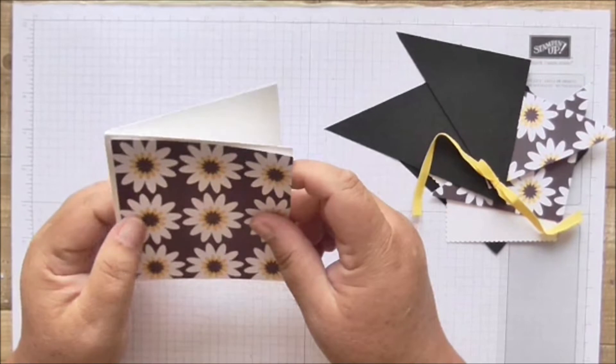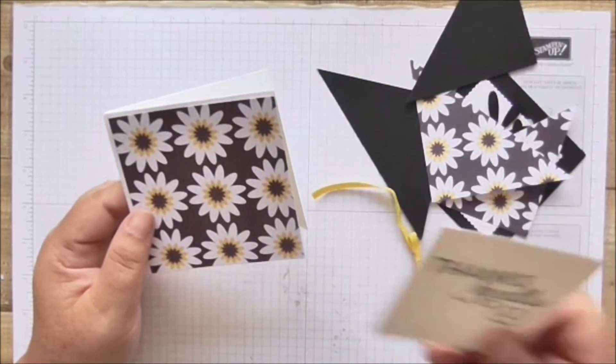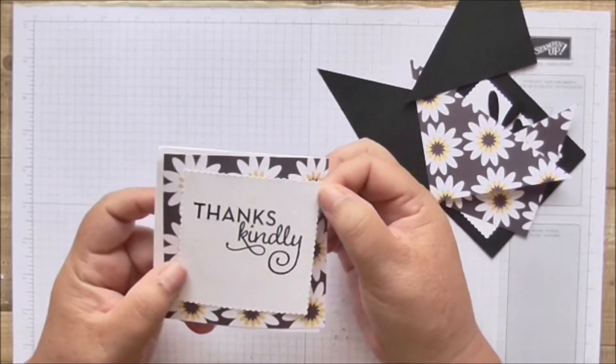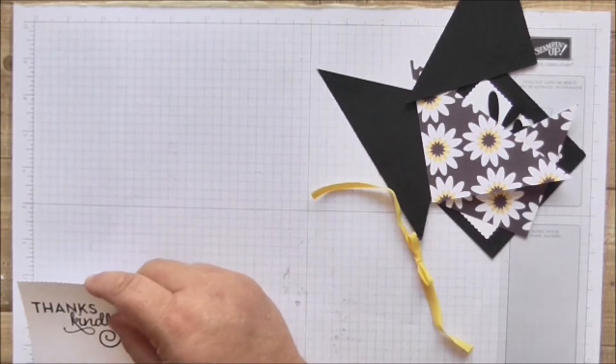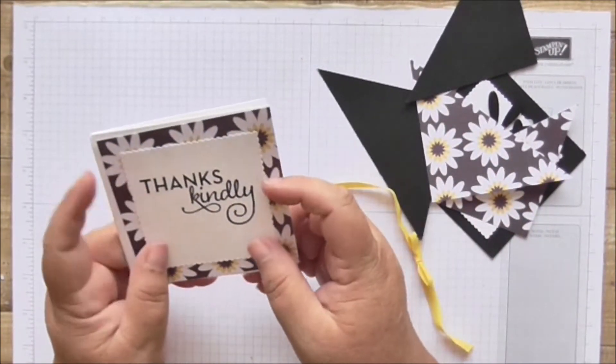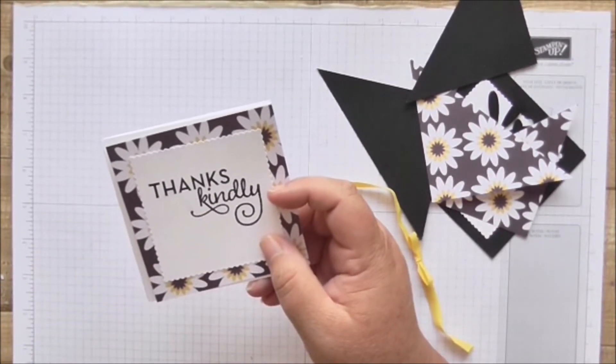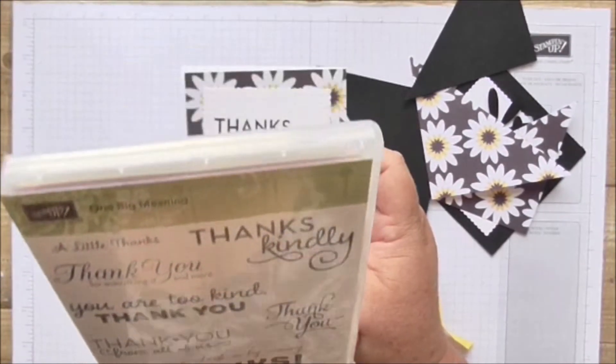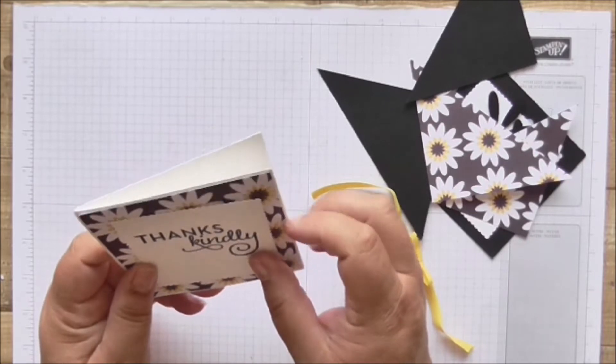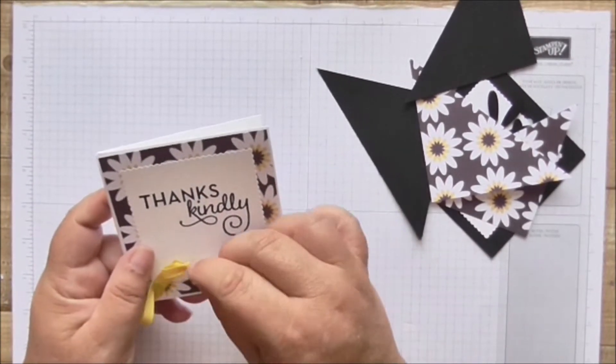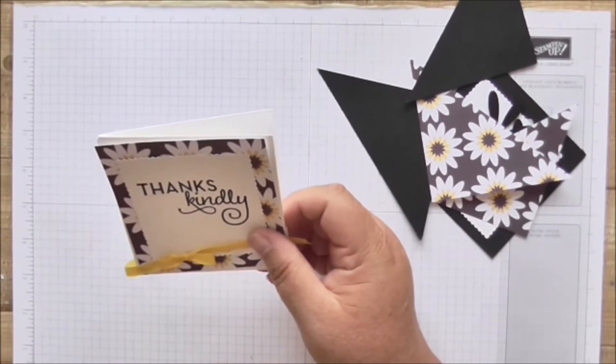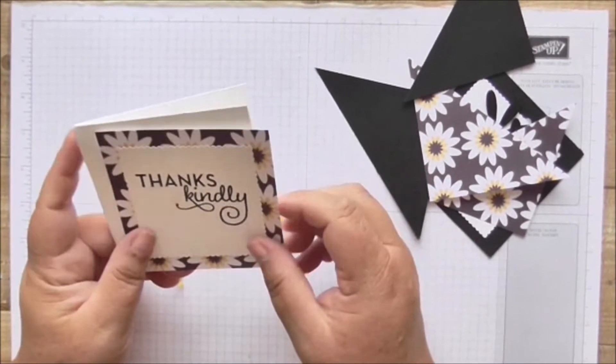So that's going to go on that front panel. And then also on the front panel is going to go a square that I've cut using a scalloped square framelit. I think it's from the layering squares framelits I'm stamping up. It's three inches by three inches. I think it is from that set. It might not be, but I think it is. And then I use, I just use basic black ink to stamp thanks kindly. And I just took that from the One Big Meaning retired stamp set. And then I'm going to put a little piece of ribbon across there. I'll show you, if you don't know how to do the bow, I'll show you how to make a bow using a comb or a bone folder or even a fork in the minute. So that's going to go across there on the front.